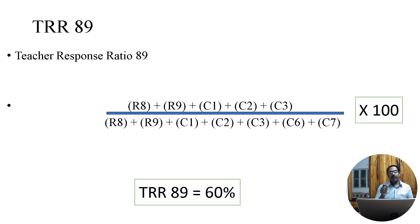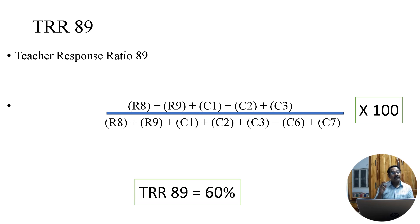TRR-89 measures how the teacher responds to and encourages student ideas. It is calculated as the tallies in categories 8 and 9 plus the first three indirect influence categories (1, 2, 3), divided by the tallies in categories 8, 9, 1, 2, 3, 6, and 7, made into a percentage. The normative value for TRR-89 is 60%.